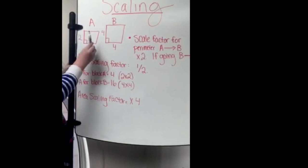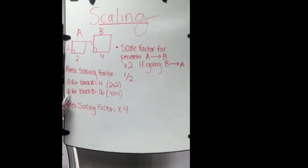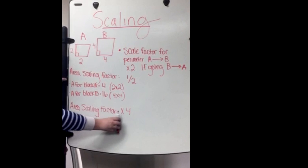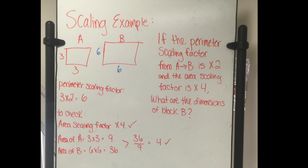When you're doing an area scaling factor, you have to find the area for block A and the area for block B. So the area for block A is 2 times 2, which is 4, and the area for block B is 4 times 4, which is 16. So your area scaling factor will be times 4 because 4 times 4 is 16.